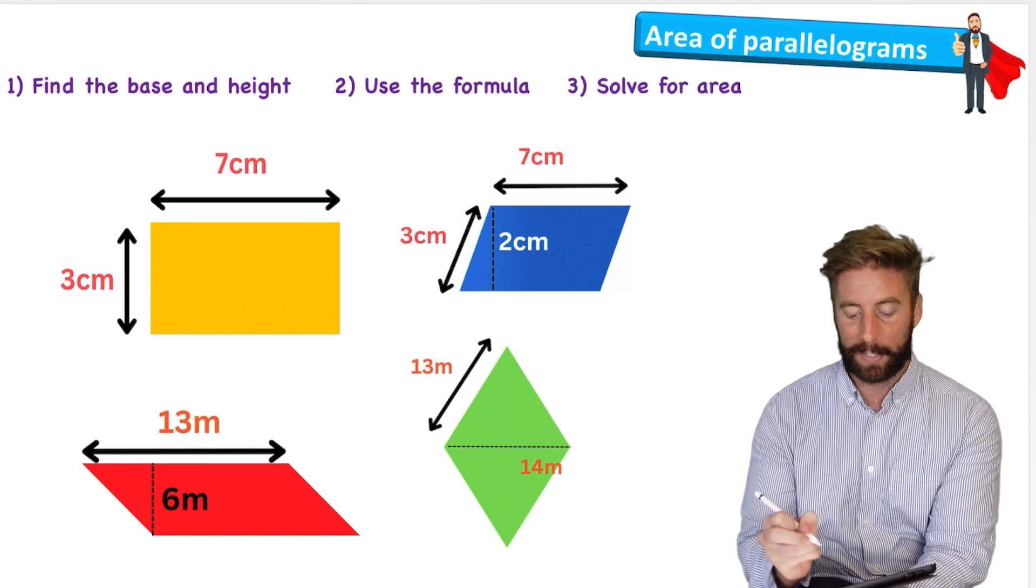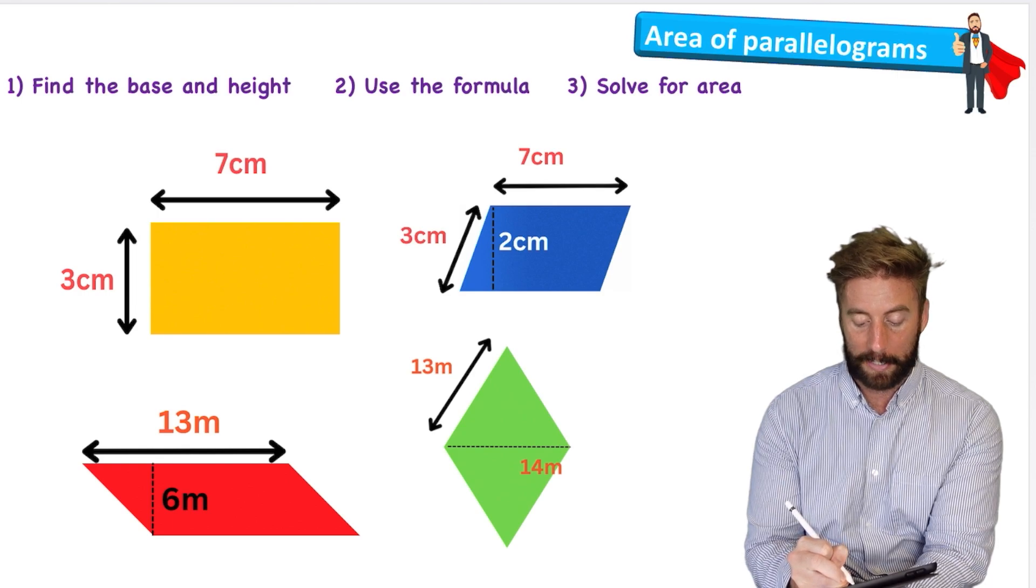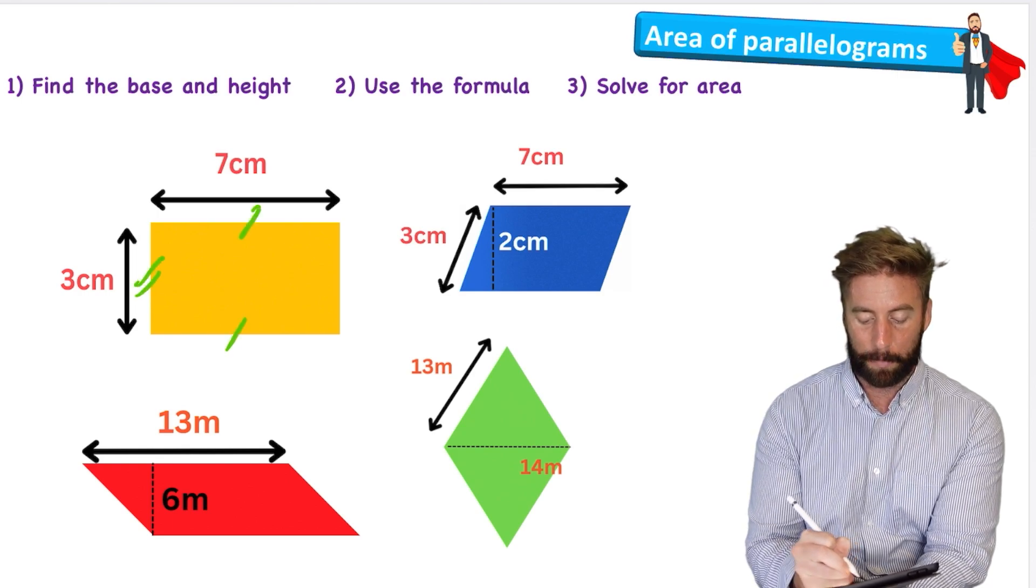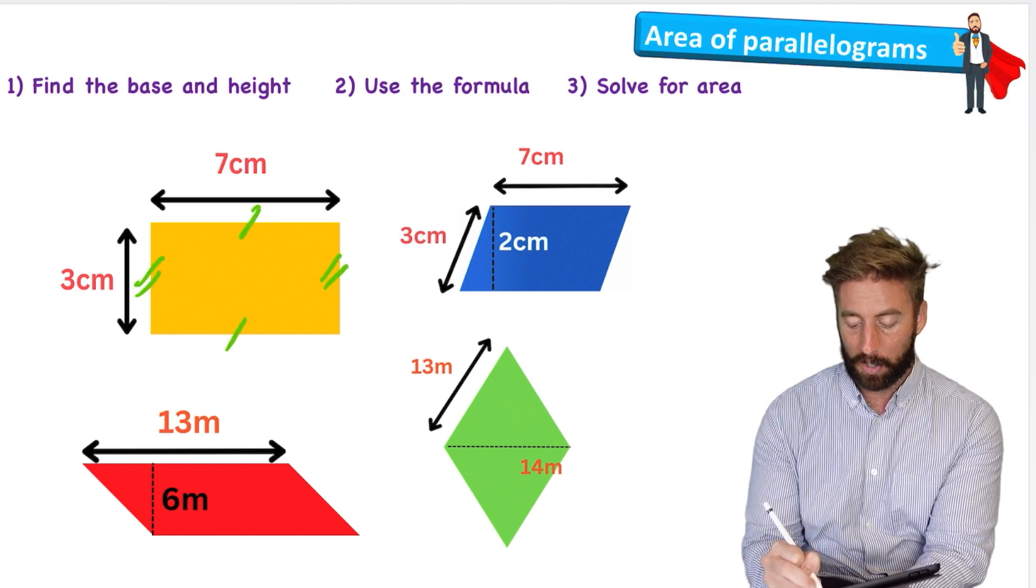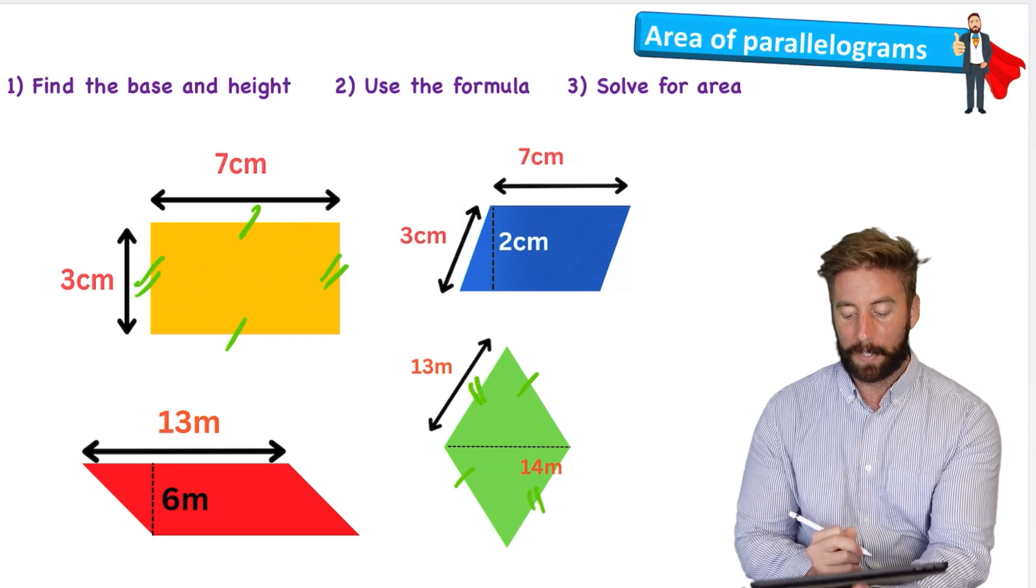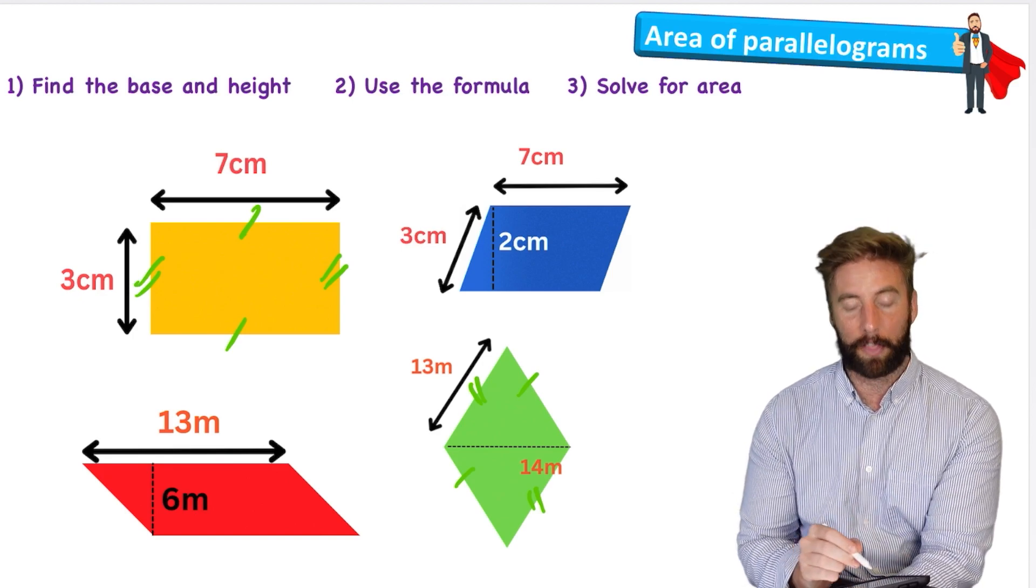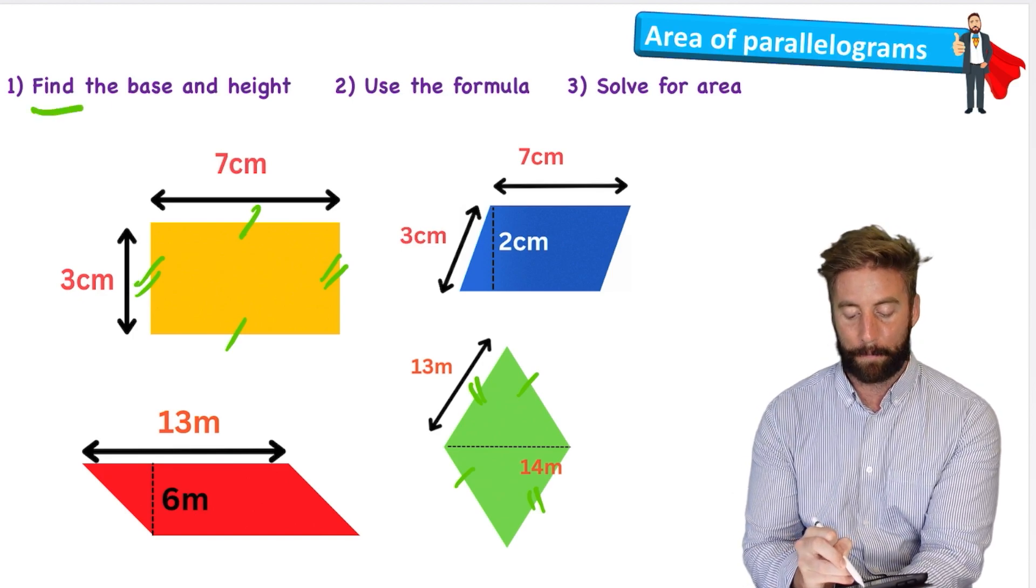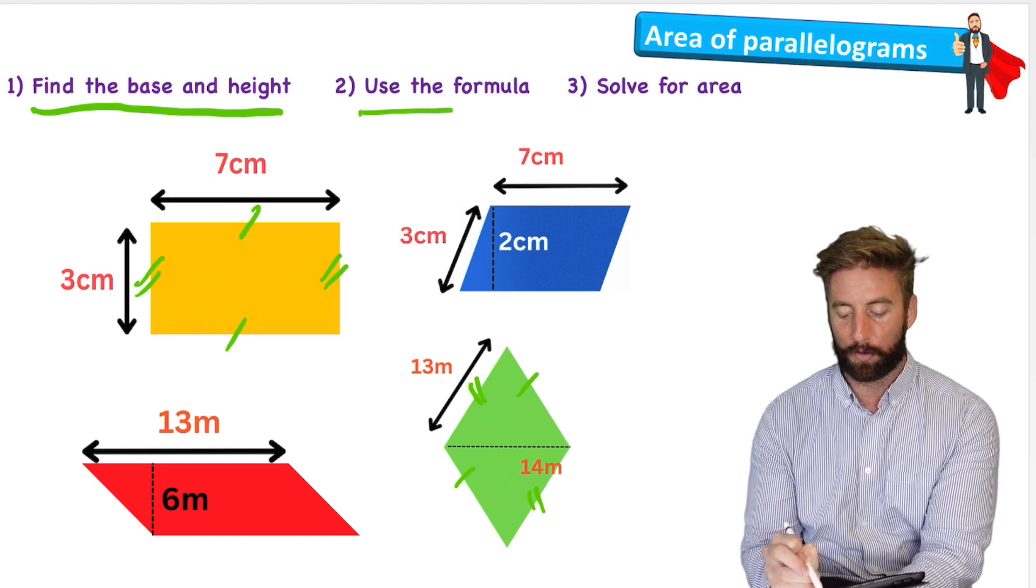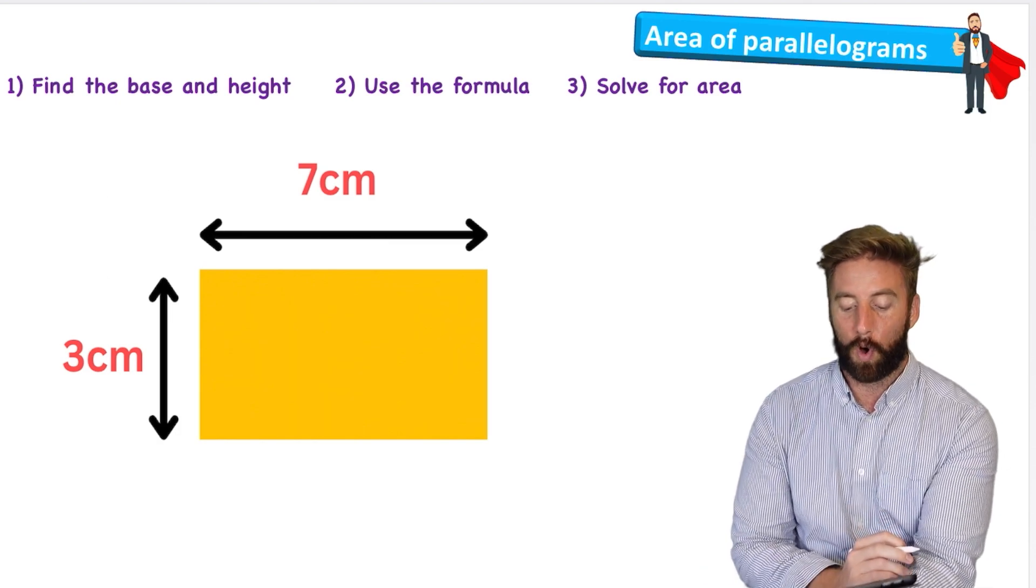So we can see with all of these examples we have four sides, but we also have sets of parallel lines. This is parallel to this, this is parallel to the opposite side, and so on, all the way around these four shapes. And how we're going to find the area of these parallelograms? Well, we're going to follow these three steps: first we're going to find the base and the height, then we'll use a formula, then we're going to solve to find the area. Let's have a look what that looks like with question one.